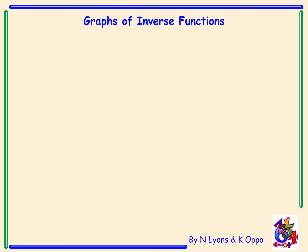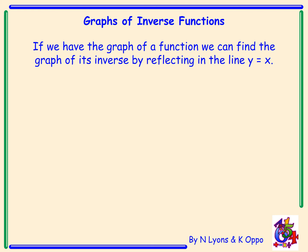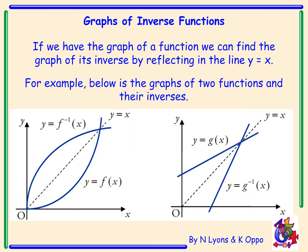Graphs of inverse functions: if we have the graph of a function, we can find the graph of its inverse by reflecting in the line y equals x. Below are the graphs of two functions and their inverses. On the left-hand side we have the graph of f of x, and we can see it's been reflected over the line y equals x — shown as the dotted line — giving the graph of f inverse. Similarly, on the right-hand side we have the graph of g of x; drawing in our dotted line y equals x, we reflect it over and get the graph of g inverse.